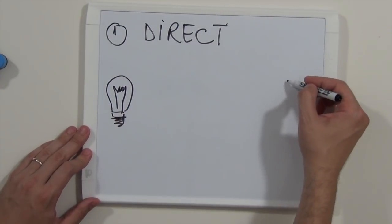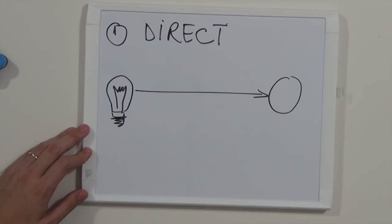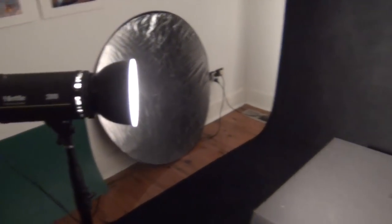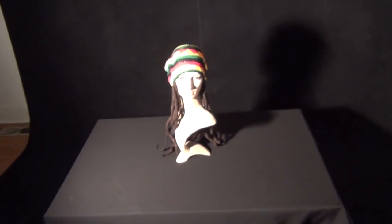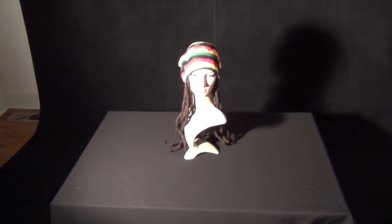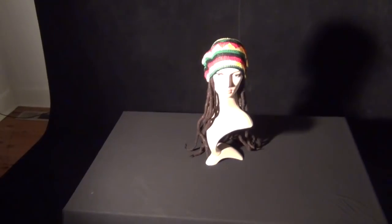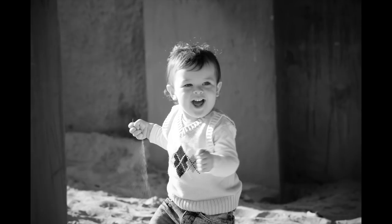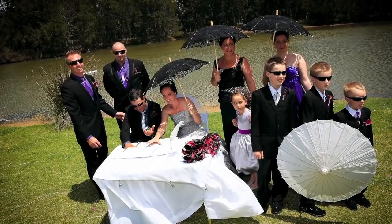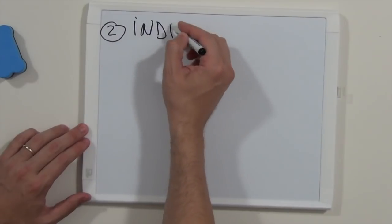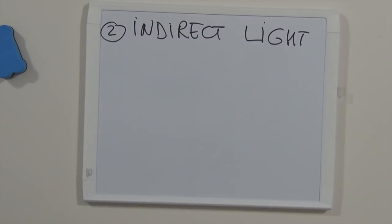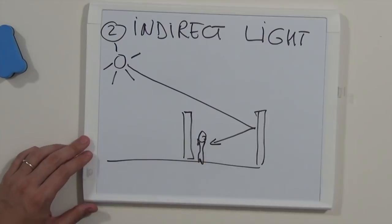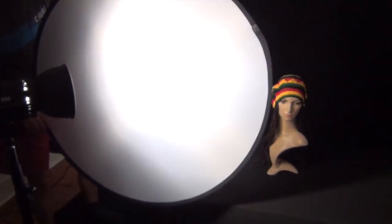We have direct light when the light comes from the source directly to the subject without any obstacles. The best example is light coming from the sun on a clear day, or light from a light bulb indoors without any restrictions. Direct light can produce strong shadows, and using direct light requires care because strong shadows and high contrast can be disturbing in an image. We can also have indirect light, when the light is either reflected by another subject or surface before it reaches the target, or filtered through an obstacle like a cloud or a curtain, or both.